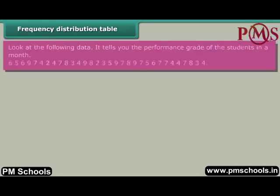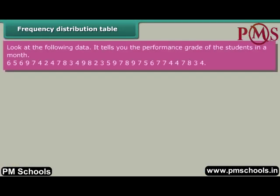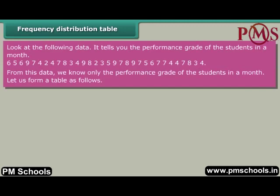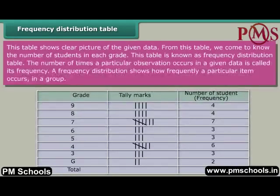Frequency distribution table. Look at the following data — it tells you the performance grade of students in a month: 6, 5, 6, 9, 7, 4, 2, 4, 7, 8, 3, 4, 9, 8, 2, 3, 5, 9, 7, 8, 9, 7, 5, 6, 7, 7, 4, 4, 7, 8, 3, 4. From this data we know only the performance grade of students in a month. Forming a table gives a clearer picture. From this table we come to know the number of students in each grade. This table is known as a frequency distribution table. The number of times a particular observation occurs in a given data is called its frequency. A frequency distribution shows how frequently a particular item occurs in a group.